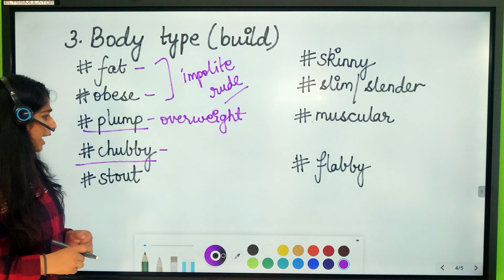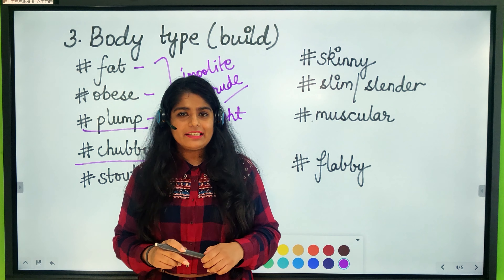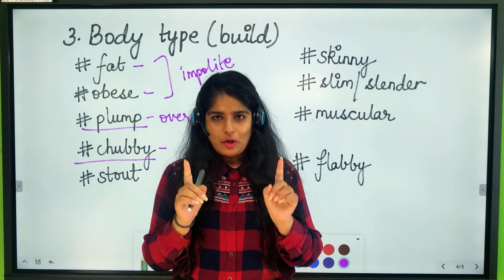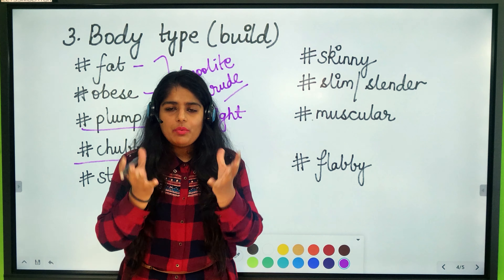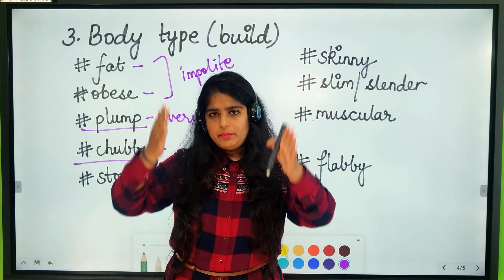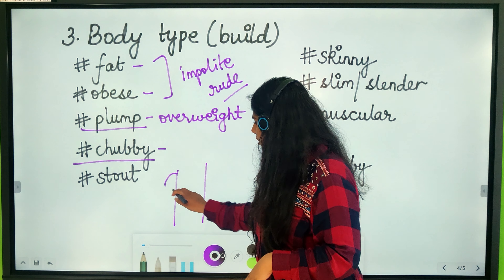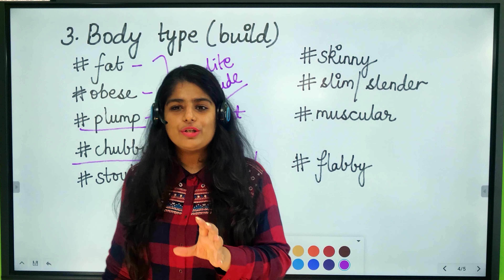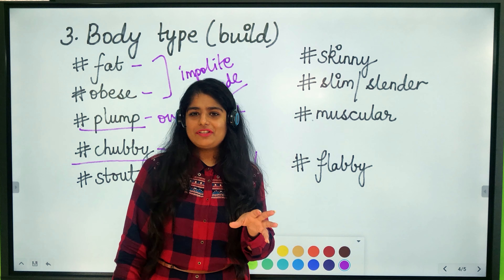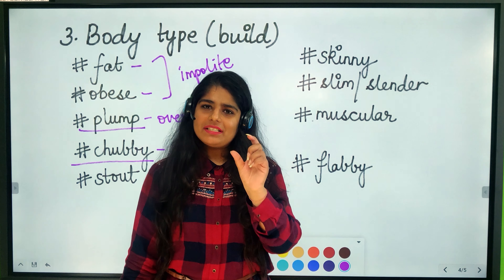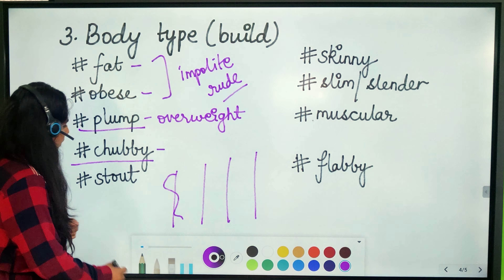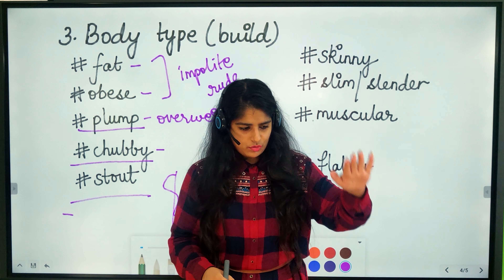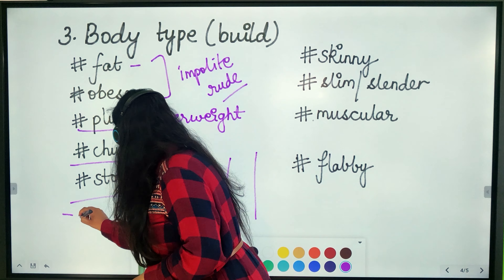Similarly, 'chubby' — you may have heard it in the nursery rhyme 'chubby cheeks, dimpled chin.' Chubby means a person who is round and plump from head to toe, and is quite overweight. It's a sweet word — if you tell someone 'you're so chubby,' they may take it as a compliment. 'Stout' is used for a person who is both short and fat.